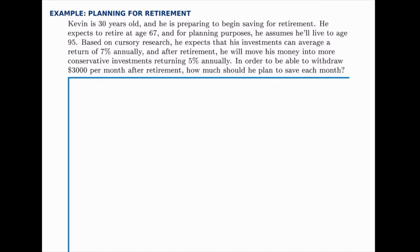Starting now, this person will save money consistently until retirement, and then at the moment of retirement, they'll shift from saving to withdrawing. The problem reads: Kevin is 30 years old, and he is preparing to begin saving for retirement. He expects to retire at age 67, and for planning purposes, he assumes he'll live to age 95. Based on cursory research, he expects that his investments can average a return of 7% annually.